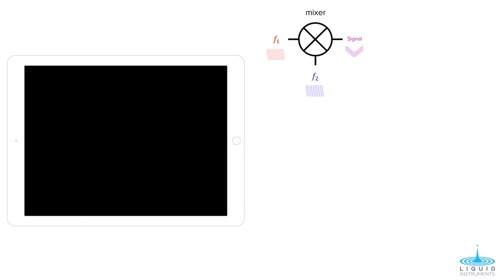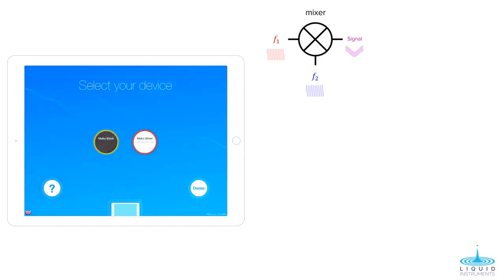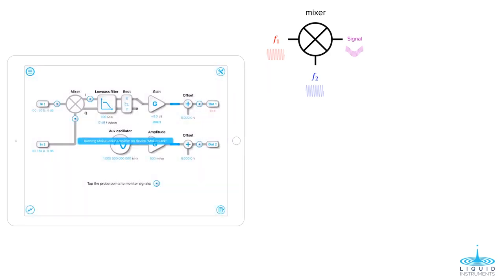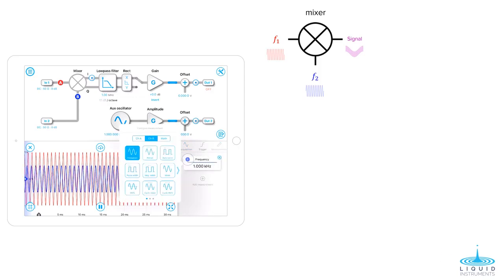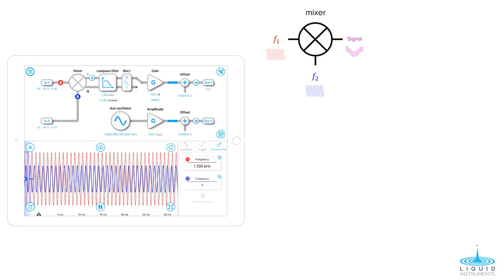Now, we switch the iPad to connect to the black Moku and launch the lock-in amplifier instrument. Inside the lock-in amplifier is a mixer function. Using the oscilloscope tool built into the lock-in instrument, we can verify that the black Moku is indeed receiving signals at 1kHz and 1.1kHz.